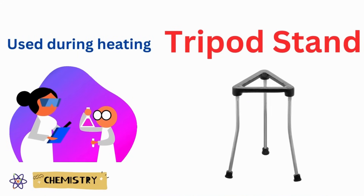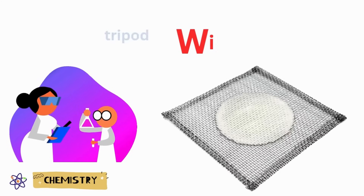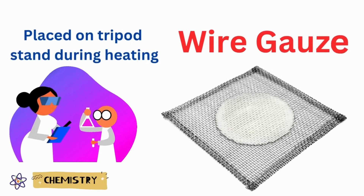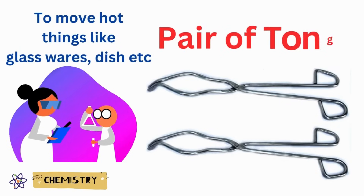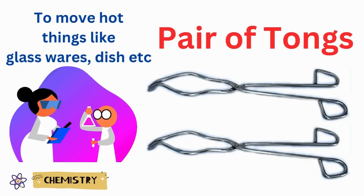Tripod stand. It is used for the heating process. Wire gauze. It is placed on the tripod stand during heating. Pair of tongs. It is used to move lab wares like dishes, glassware, etc.